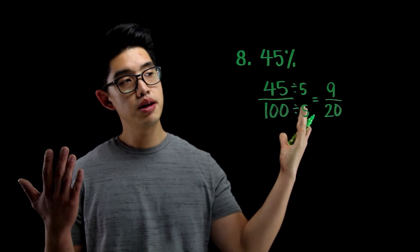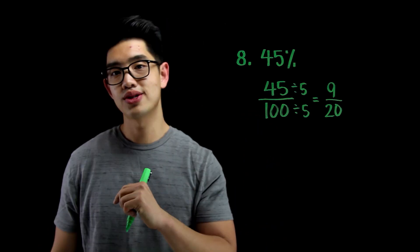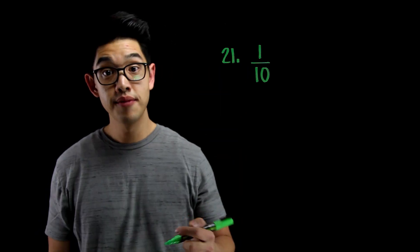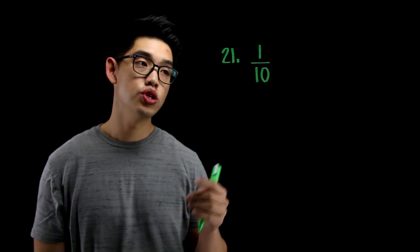Oh, can't simplify anymore. 9 over 20 is your answer. Number 21 shows you a fraction right here, 1 tenth. And I need to make it back into a percent.